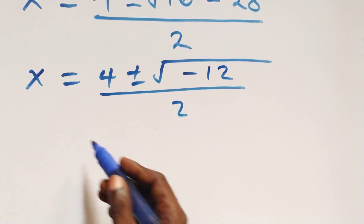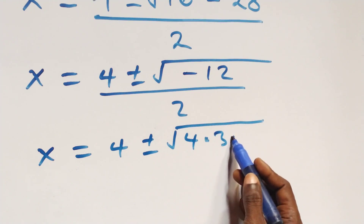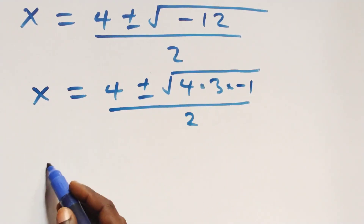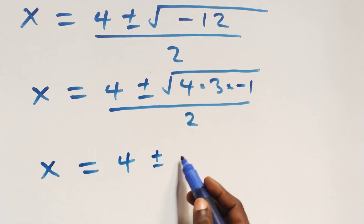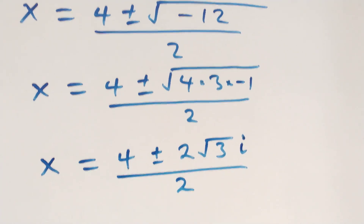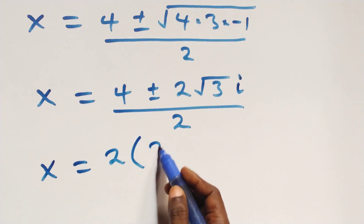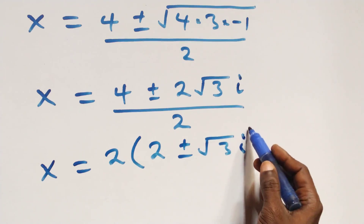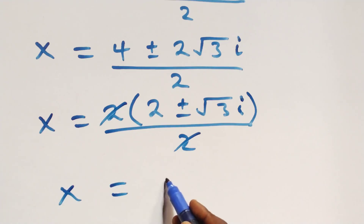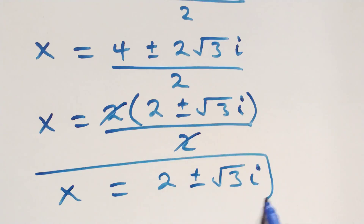Which implies we can write this as x equals to 4, plus or minus square root of 4 times 3 times minus 1, all over 2. And when we separate this, root 4 that's 2, we take it out, and we have x equals to 4, plus or minus 2, then we have root 3, and minus 1 is i, all over 2. This factors 2 out, and becomes x equals to 2 times 4 plus or minus root 3i, over 2. The 2's cancel each other, and we have x equals to 2 plus or minus root 3i. Also, we have 2 complex solutions here.